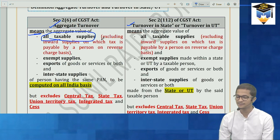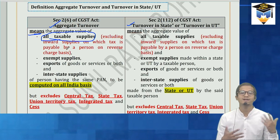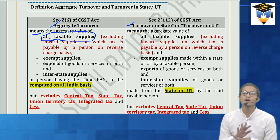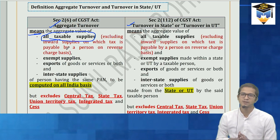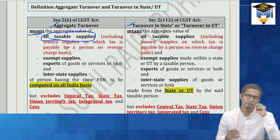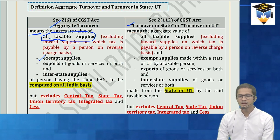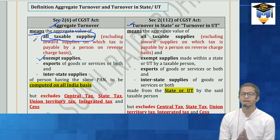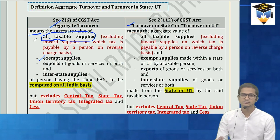So inward supplies on which you paid reverse charge — like if you took a service from an advocate and paid GST on it — that will NOT form part of your aggregate turnover. Then your exempt supplies will also be included in aggregate turnover. Section 2(47) of CGST Act defines exempt supply.